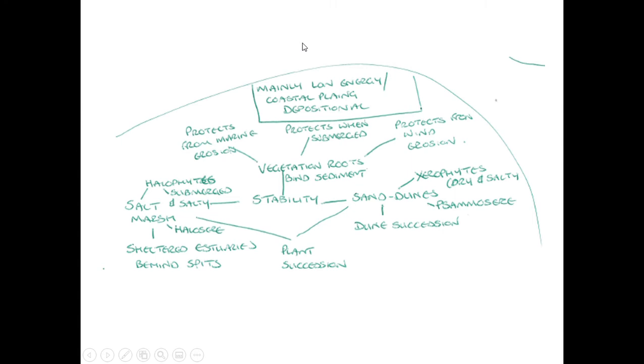Finally, for enquiry question one, we have these areas of mainly low energy, low energy and the formation of coastal plains, which tend to be the depositional landforms. Now, there are two main types of these: the sand dunes and the salt marshes.